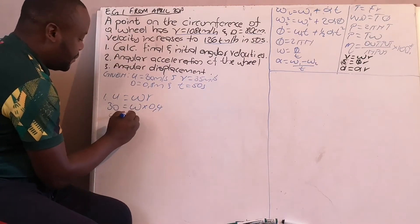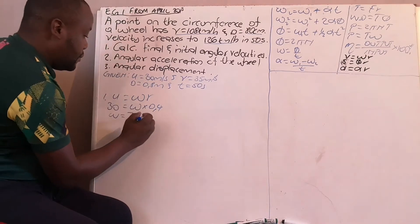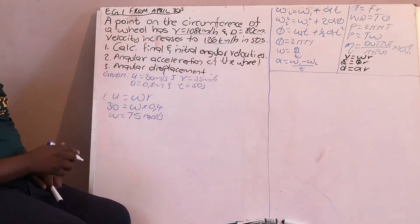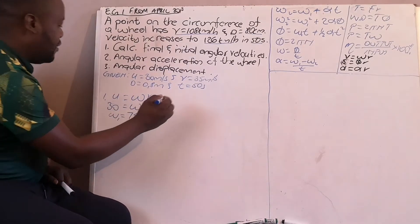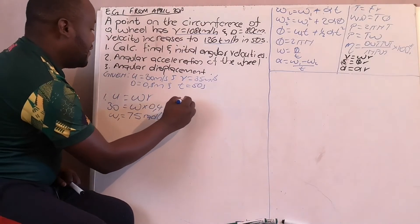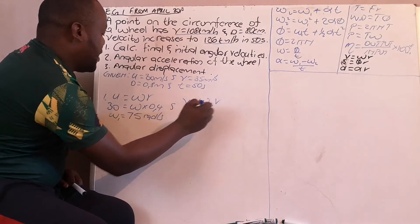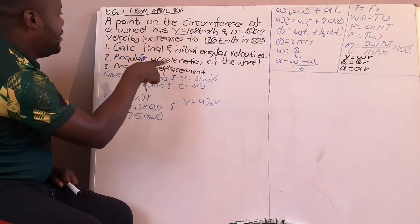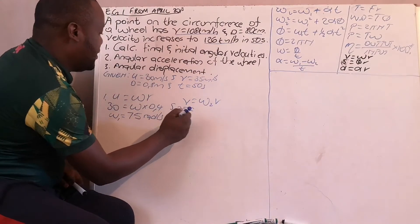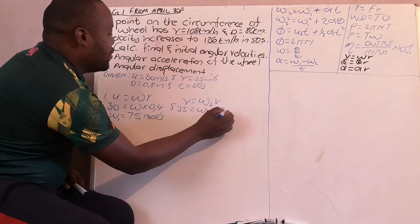The initial angular velocity works out to 75 radians per second. For the final angular velocity, we use the same equation: V equals omega-2 multiplied by r. So 35 equals omega-2 multiplied by 0.4, which gives us the final angular velocity.